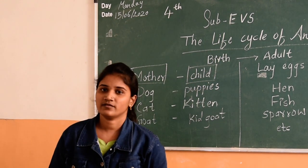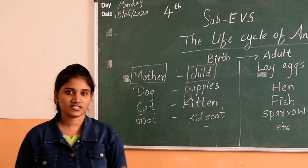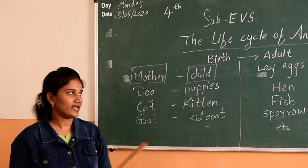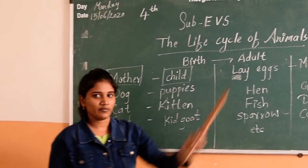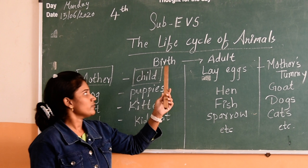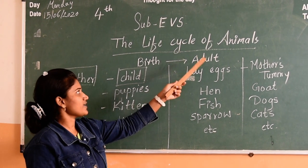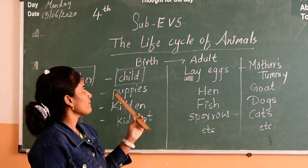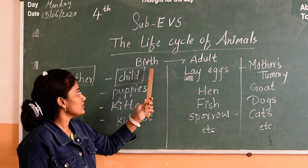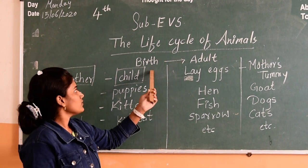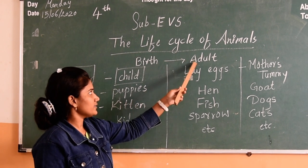So from our new academic year, we are going to start our first chapter. The chapter name is The Life Cycle of Animals. So first we will see what is meant by the life cycle of animals. Life cycle of animals means the animals, they are going to start from birth to adult.